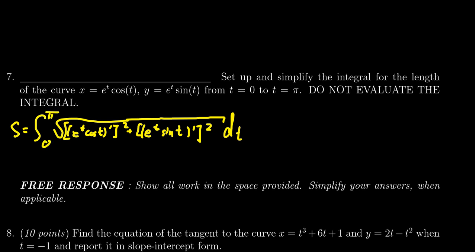We've now set up the integral, but the instructions specifically say we have to simplify it. So my strategy is to take the derivatives of these expressions. By the product rule, you're going to get a sum of a couple of things. With the first one, we take the derivative of e to the t cosine of t.